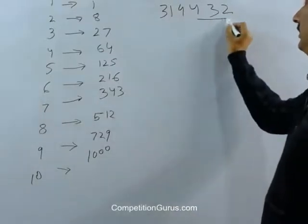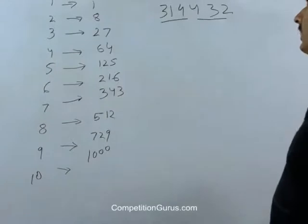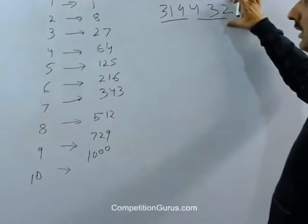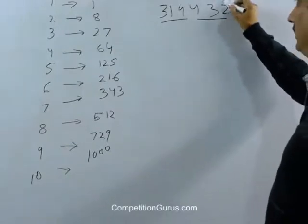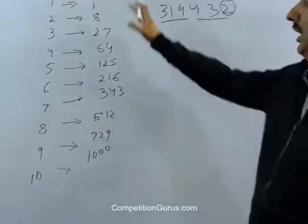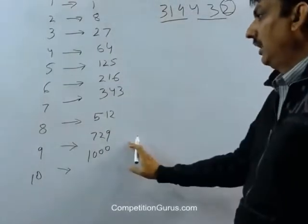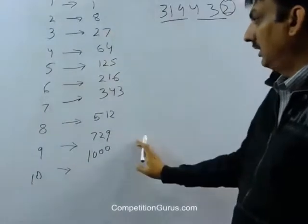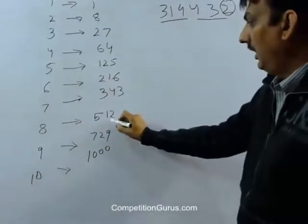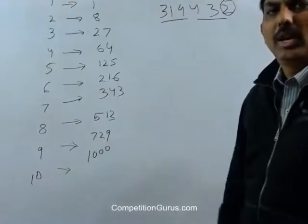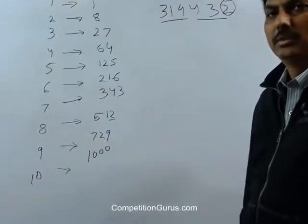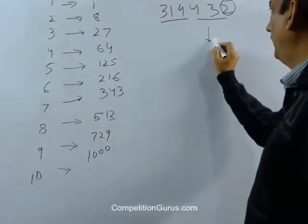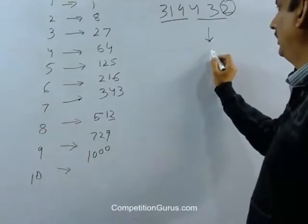We divide this number into 2 parts. And then we see the number at the unit place here. Number at unit place here is 2. And in this list, in which cube 2 is at the unit place. So I have to go through all these numbers, and I find that 8 also has 2 at its unit place in its cube. So 432 will be replaced by, in order to find the cube root, we will write 8 here.